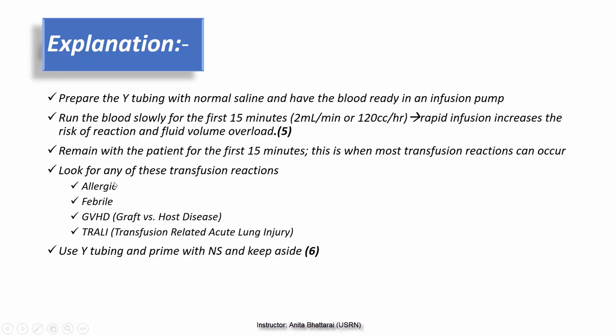In the first 15 minutes there is the highest chance of transfusion reactions occurring. Even after this timeframe we need to continuously monitor the patient, but not as frequently as at the start of the transfusion. The blood product should be run slowly — in the first 15 minutes at about 2 ml per hour or 120 cc per hour. Infusing blood products too fast risks allergic or transfusion reactions and fluid volume overload. Therefore, infusing within 50 to 60 minutes is not advisable. We also do not use dextrose for priming the tube — normal saline is used to prime the tube.